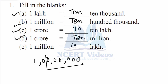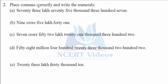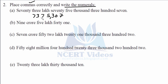Part e: 1 million is again 10 lakhs as we did earlier. Now question 2 — place commas correctly and write the numerals. We have to first write the numerals, then place commas. So 73 lakh 75 thousand 307 is written as 73,75,307. We place commas according to Indian standards because lakhs come in the Indian system, not international.